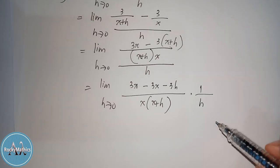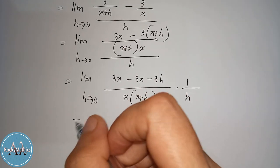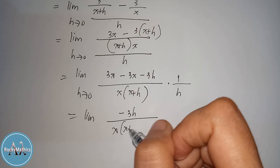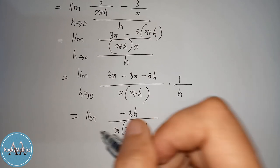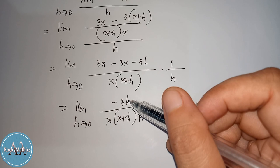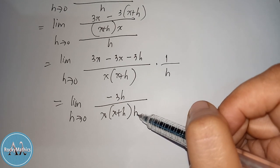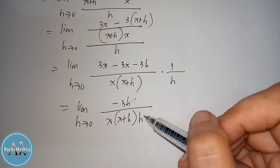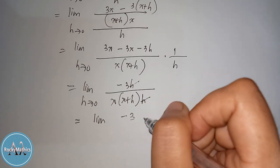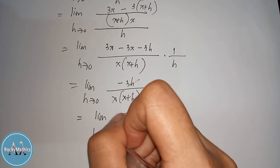Now take note that 3x minus 3x equals 0. So this becomes the limit of negative 3h over x times x plus h, and there is still h here, as h approaches 0. Since h is a common variable in numerator and denominator, they cancel to give 1. So the new expression becomes the limit of negative 3 over x times the quantity x plus h, as h approaches 0.